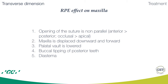The rapid palatal expansion effect on the maxilla involves opening the suture, and the opening is not parallel — it is more in the anterior than posterior area, and more open occlusally than apically. The maxilla is displaced downward and forward, the palatal vault is lowered, buccal tipping of posterior teeth is produced, and a diastema results.